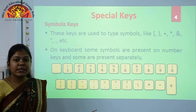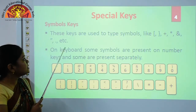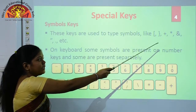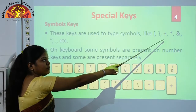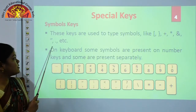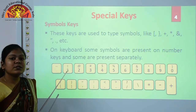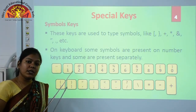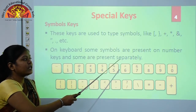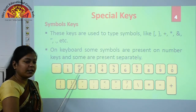Our next special key is the symbols key. We use symbol keys to type symbols like square brackets, curly braces, plus symbol, asterisk symbol, ampersand symbol, double quotation symbol, dot symbol, etc. Symbols keys are used to type symbols. On the keyboard, some symbols are present on the number keys and some are present separately.